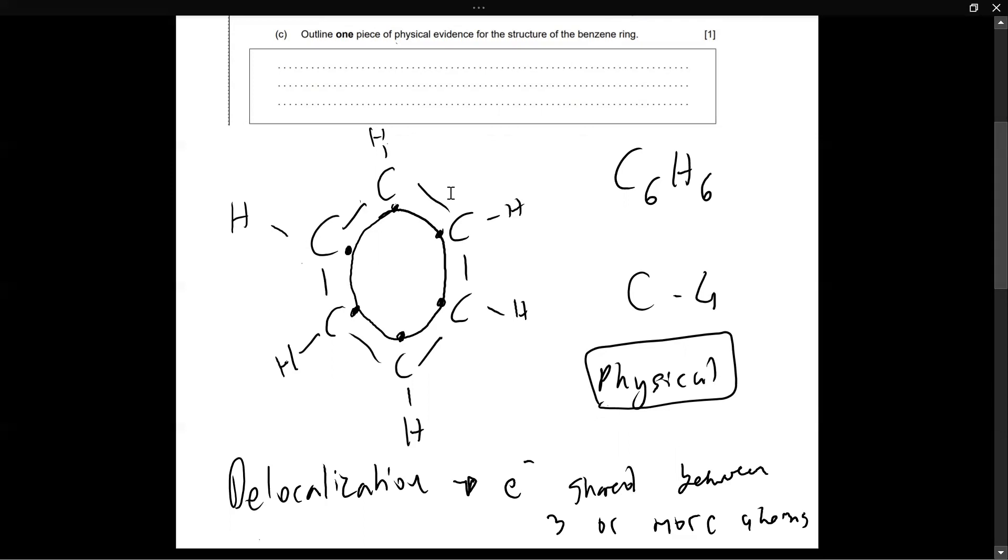And in this question, they've asked us to outline one piece of physical evidence for the structure of the benzene ring. And by the structure, they mean this structure, which is now considered as the correct structure. And like I said, there were two categories of evidence that falsified Kekule's structure. One was physical and one was chemical. But they've only asked us about physical. Physical evidence: one was the bond length of the carbon to carbon atoms in the benzene structure. So scientists measured this bond length between the carbon to carbon atom. And what they found was quite surprising. They found out that all the carbon to carbon bond lengths were equal to each other.